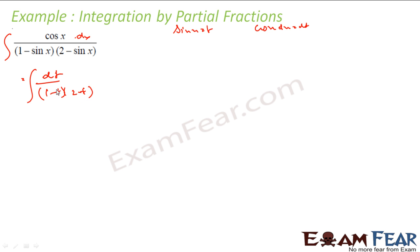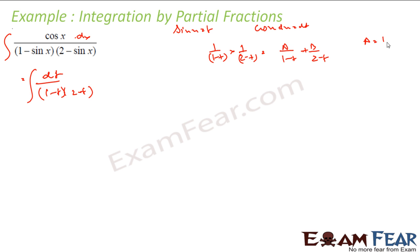This kind of equation is easy to solve because I can write 1 / ((1 - t)(2 - t)) as A/(1 - t) + B/(2 - t). If you solve this you get A = 1 and B = -1. So this integral can be written as integration of 1/(1 - t) dt minus integration of 1/(2 - t) dt.